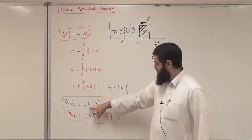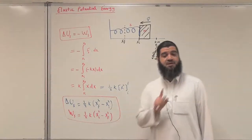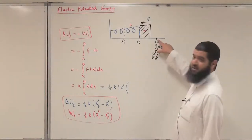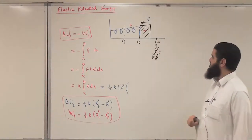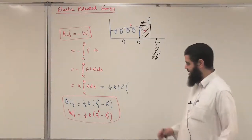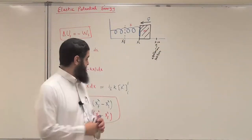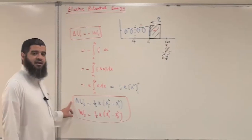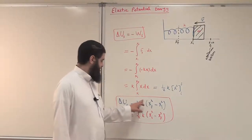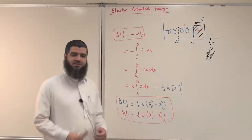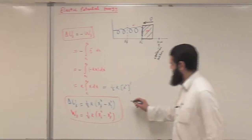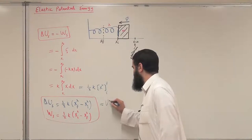It is very important to note that K must be in units of Newton per meter, and X initial and X final must be in meters, measured with respect to the equilibrium position of the spring — that is, how far the spring is from equilibrium initially and finally. With these units, the change in elastic potential energy ΔU_s will come out in joules, since Newton per meter multiplied by meters squared gives joules.